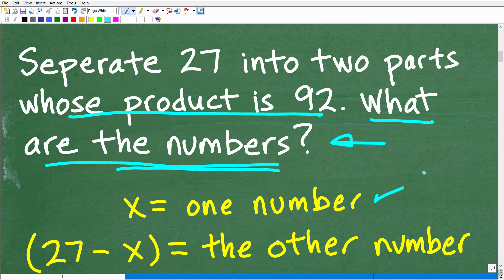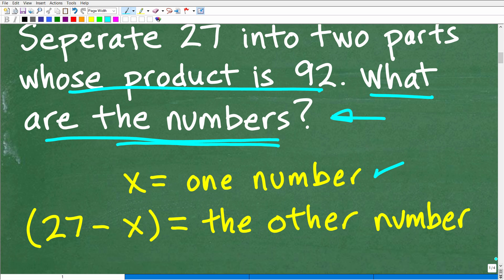So if X is equal to one number, what could we do to represent the other number, right? Because we're going to separate 27 into two parts. Well, we could say 27 minus X, right?